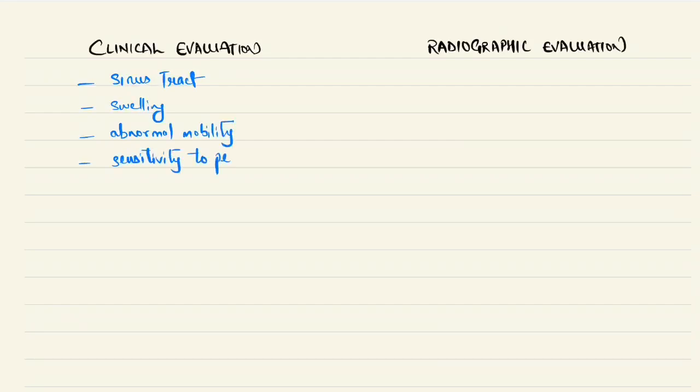Now let us identify or correlate the clinical evaluation as well as the radiographic evaluation in cases of primary teeth and children. Suppose there is presence of sinus tract or we look for sinus tract swelling, any abnormal mobility with the tooth, or sensitivity to percussion. Along with this we have to correlate with the radiographic findings, that is the furcation involvement or the furcation radiolucency is there, then there might be bone loss and there might be periapical radiolucency.